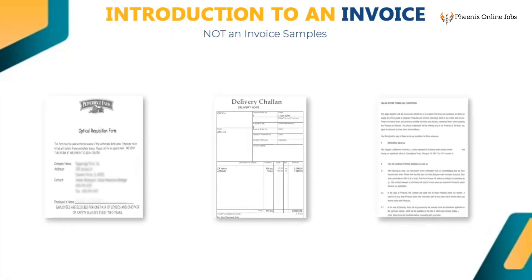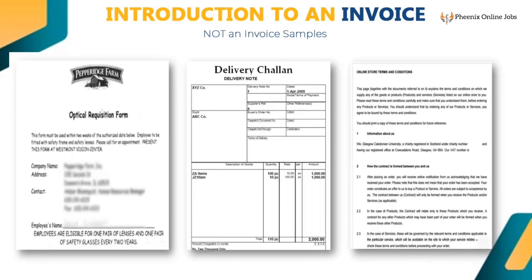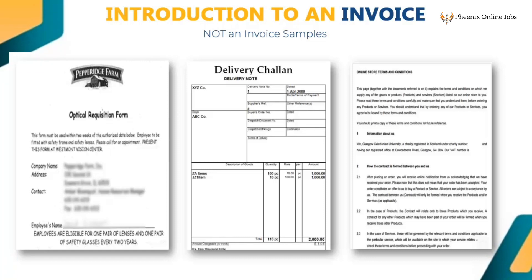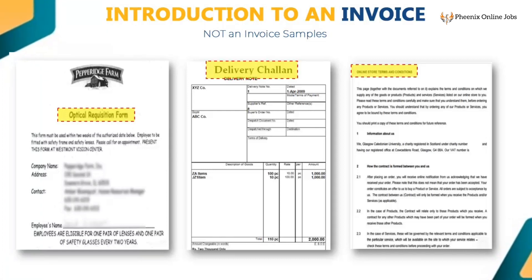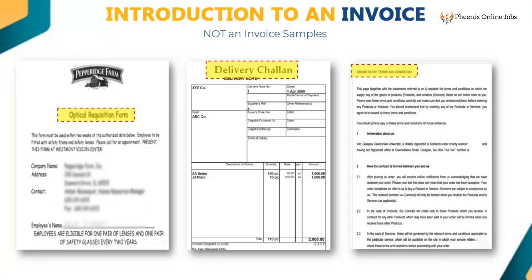Sometimes we find images that are not actually invoices. In these images there will be no invoice number, date, or bill to or supplier details. These are some samples of images that are not invoices. Hence, use hotkeys Ctrl+Enter to reject all the invoice-related fields in such images.